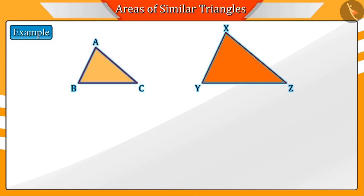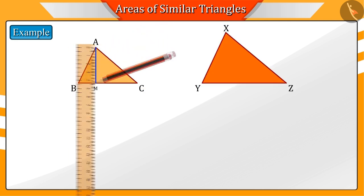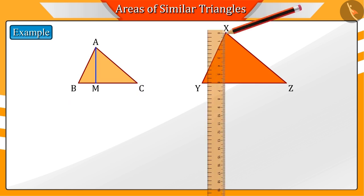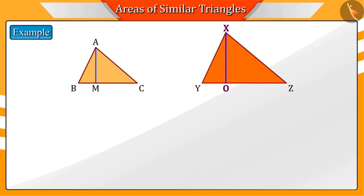Let us draw the altitude of both the triangles. That is, the altitude AM on the side BC and the altitude XO on the side YZ.